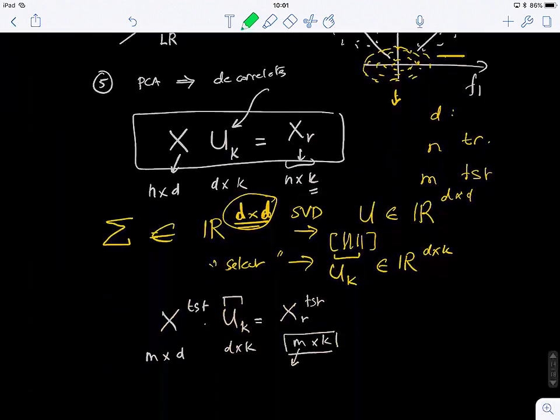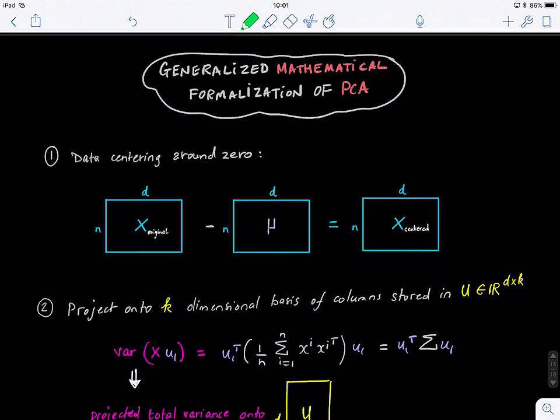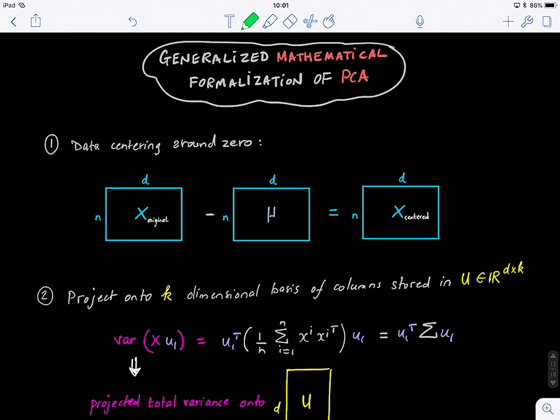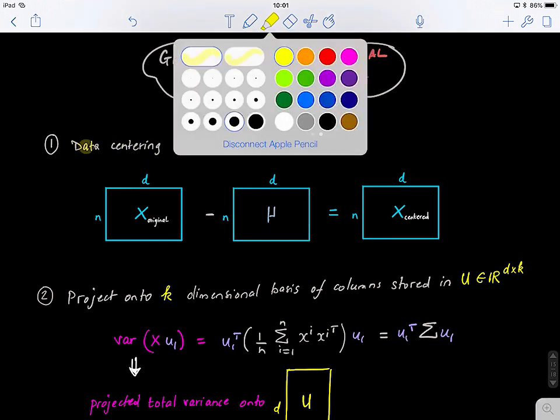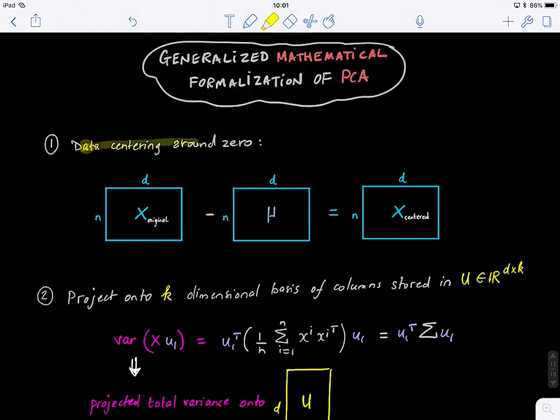Right now is a more generalized formalization of PCA. So let's revise the steps together. So first thing, we do the data centering. So we center the data around zero, which means all features are centered around zero. Their average is zero.